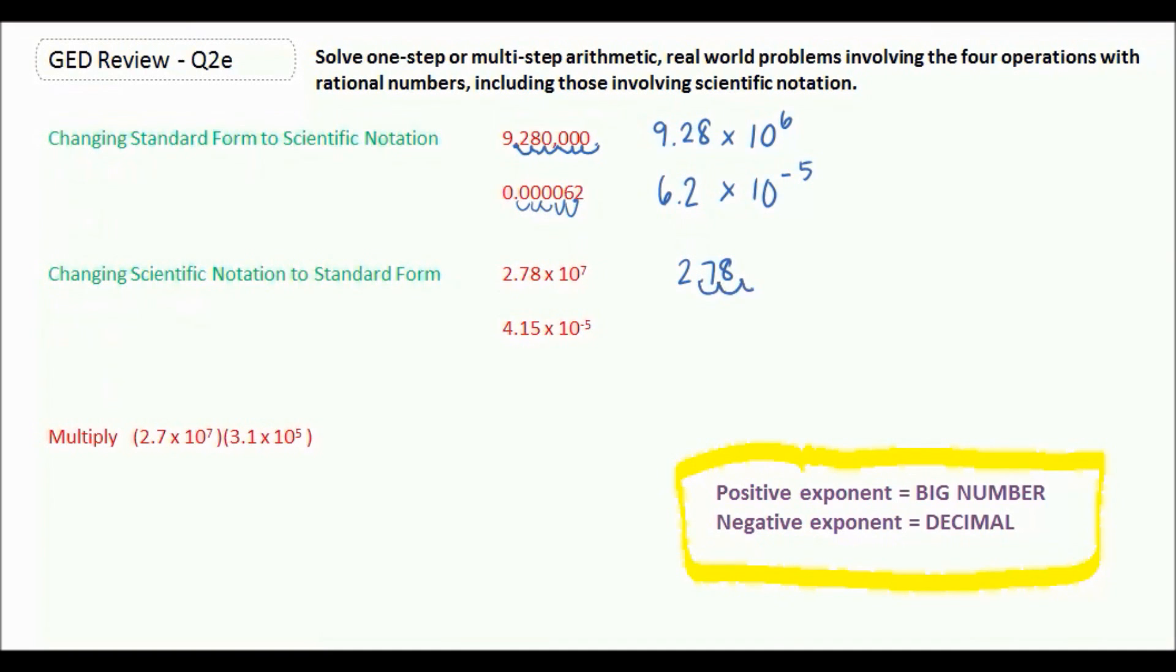So 1, 2, 3, 4, 5, 6, 7. And with all those blank spots, we're going to fill in 0's. So our final answer would be 27,800,000.